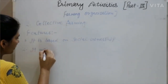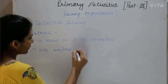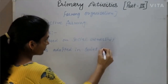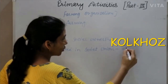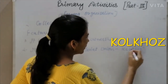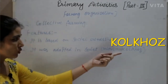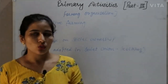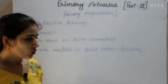The second feature is that collective farming was adopted in the Soviet Union under the name Kolkhoz. This is the name of collective farming that originated in the Soviet Union. The target was to improve agricultural work and outcomes.